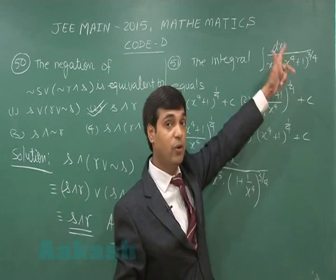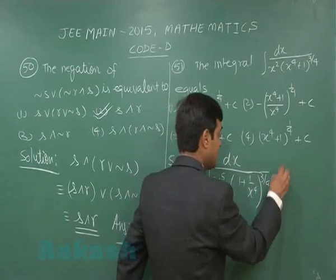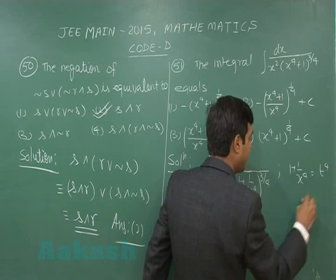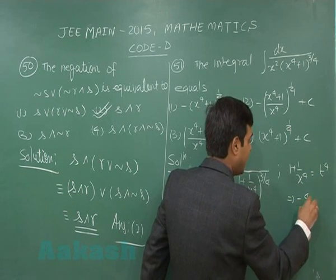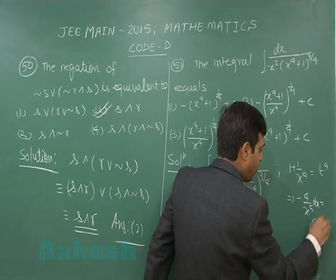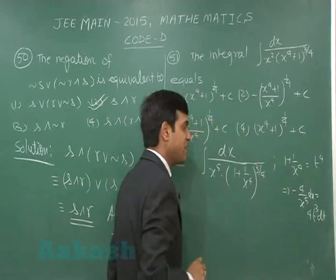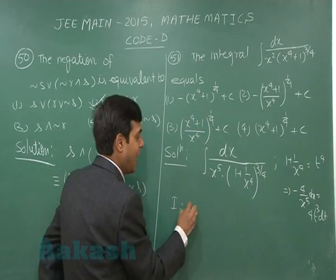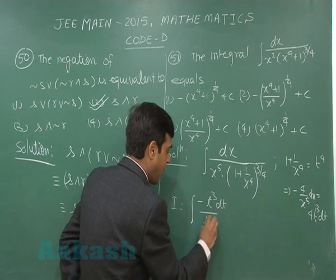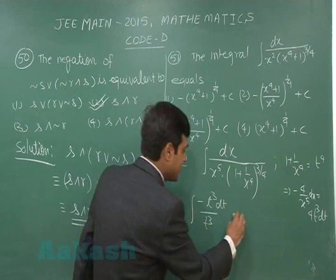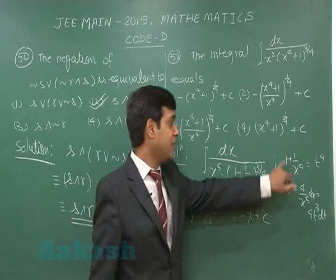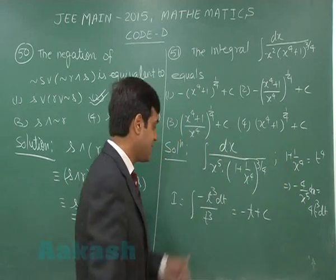We do this so that we can substitute t = (1 + 1/x⁴)^(1/4), giving dt: −4/x⁵ dx = 4t³ dt. On substituting, we get the integral as −t³ dt / t³, which simplifies to −t + C, where t = (1 + 1/x⁴)^(1/4).